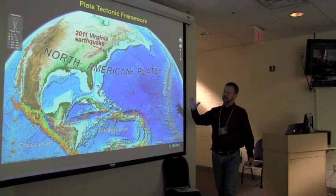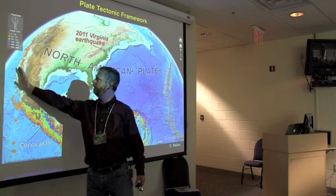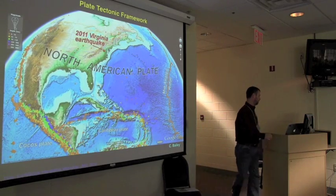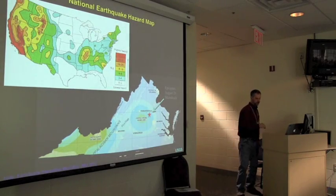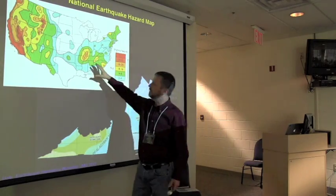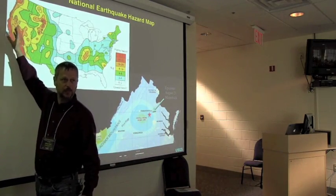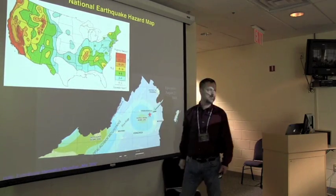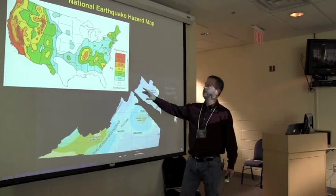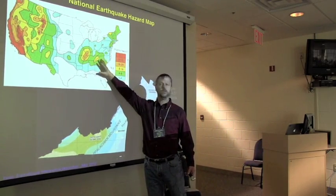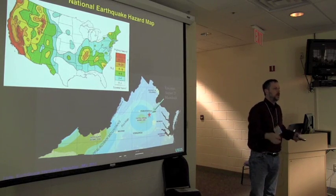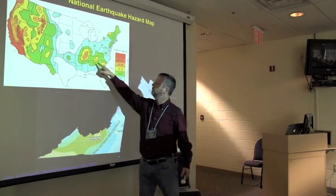We're a long way from plate boundaries — pretty close to the middle of the North American plate, far from the west coast, the mid-Atlantic, or the Caribbean. So why do we have earthquakes mid-plate? The National Earthquake Hazard Map shows the highest hazards at plate boundaries, but there are substantial hazards on the east coast too, including central Virginia. These indicate places with clusters of small earthquakes suggesting possible larger events, or known historical large earthquakes such as Charleston and New Madrid.